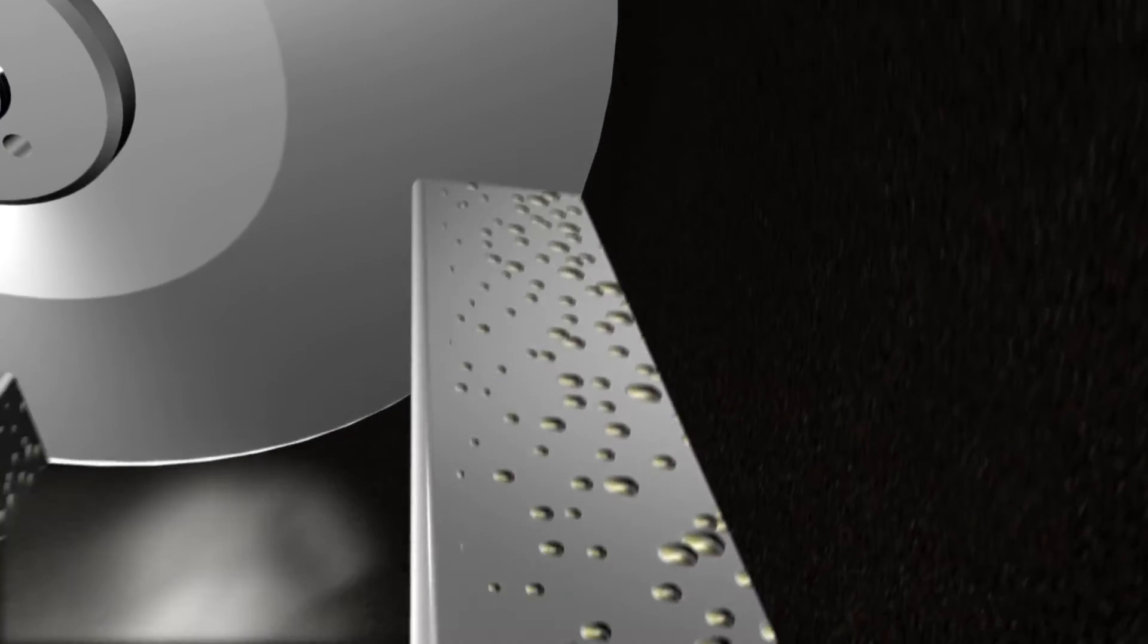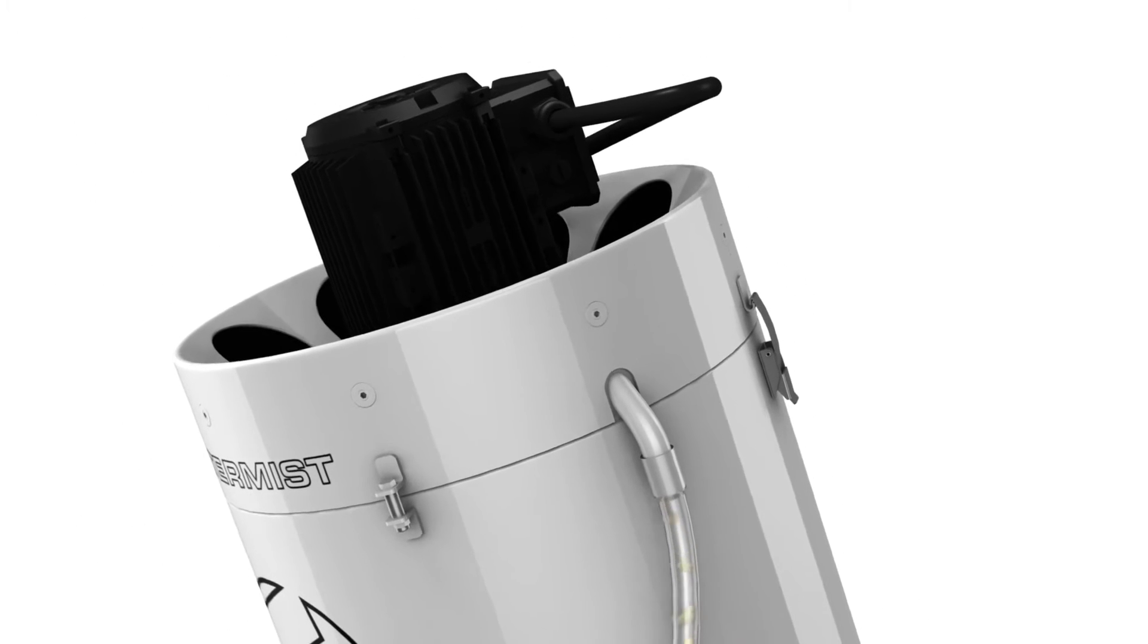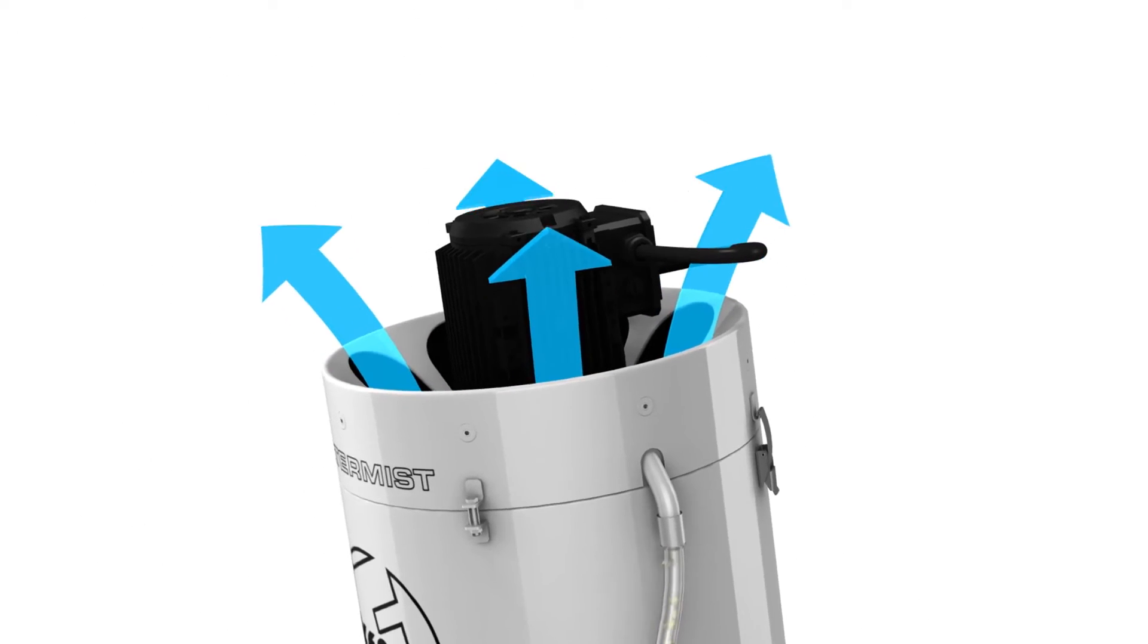Special drum pads assist the coalescing process and filter out stray solid particles. Centrifugal force pushes oil to the unit's outer case where it drains back to the machine for reuse or collection, and clean air is returned to the workshop through the top of the unit.